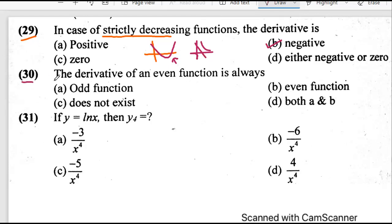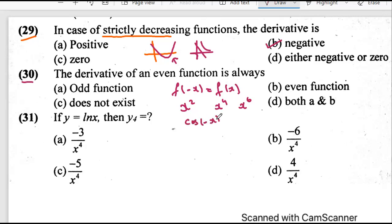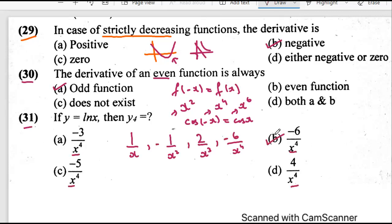Question 30 says: the derivative of an even function is always what? An even function is one where plugging in negative values still gives positive values — examples include x to the power 4, x to the power 6, and cos x, since cosine is symmetric. When we differentiate these, we get 2x, 4x cubed, 6x to the power 5 — these are no longer even functions. They become odd functions, because plugging in negative values gives negative answers. So the derivative of an even function is an odd function.